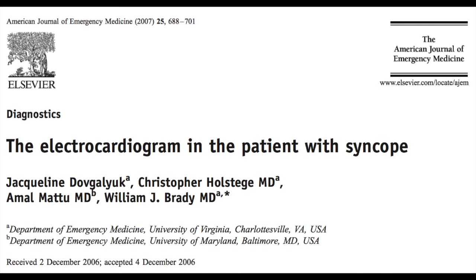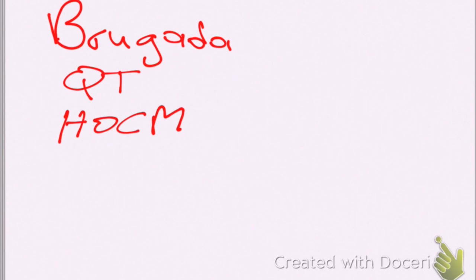The paper by Amal Mattu and friends says you're going to look for four things over and above what you usually would do for arrhythmias and stuff. You're going to look for Brugada syndrome, QT prolongation, hypertrophic obstructive cardiomyopathy, and WPW.